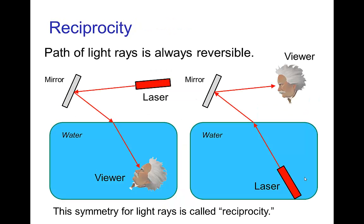A fundamental principle in optics is that in geometric optics, the path of light rays is always reversible. What that means is, if we set up a laser shining into a mirror, which then the light passes underwater, and there's a viewer — if we trace that light ray, it's always possible to switch the light source and the viewer. And if we do that, the resulting light ray follows exactly the same path. So we have a symmetry of light going from a source to a viewer; it's the same path if we switch the viewer and the source.